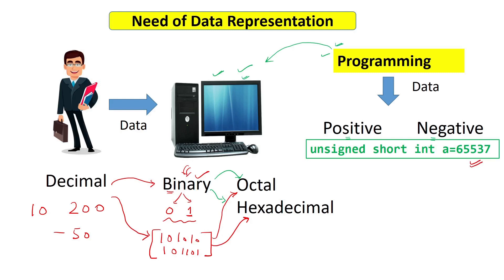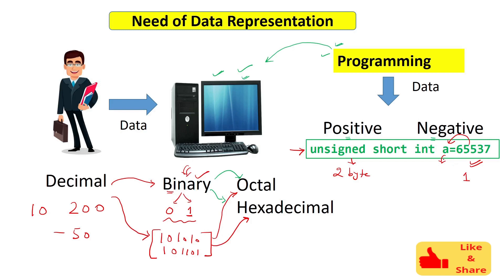The real problem comes when you have to answer questions like this: in C language, the line says 'unsigned short int A' and this variable is holding the value 65537. Now, unsigned short int is 2 bytes in C. If I ask you what will be the output in variable A, many of you would say 65537, but the answer is no — you will actually get 1. To understand this, you need to know how the data inside variable A is stored, and here comes the need to understand signed and unsigned representation of data.